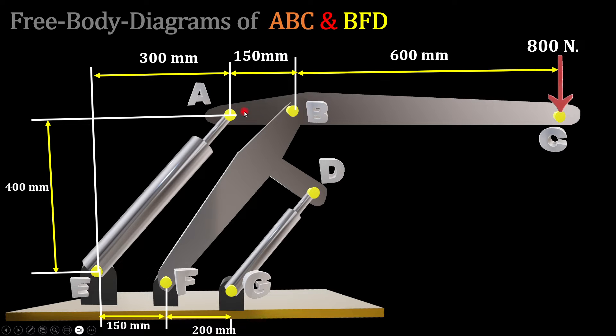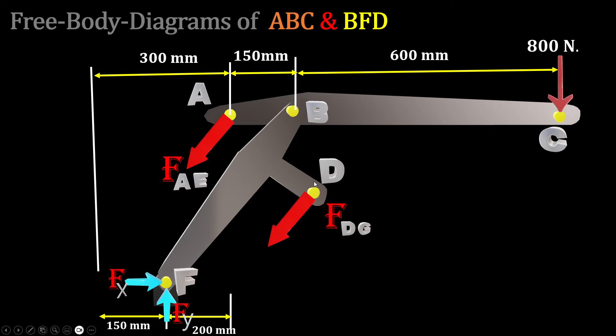We can have free body diagrams of both ABC and BFD. In that case, by summation of moment this time about point F, we can easily get the other force. With this we already know what FAE is, now FDG is the unknown and we can get the forces.